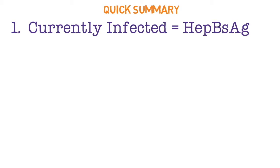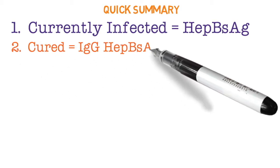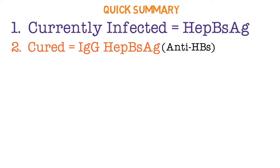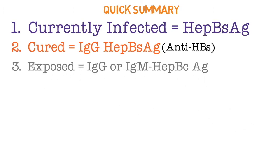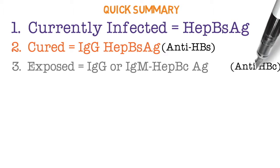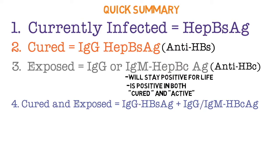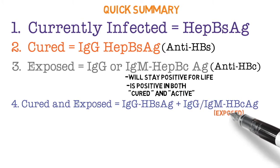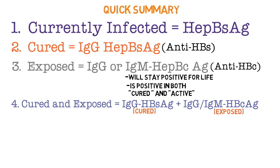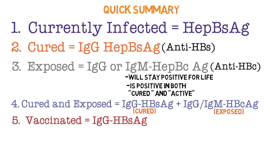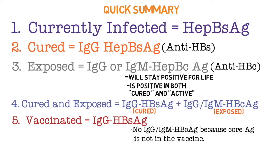Quick summary: Number one — currently infected equals hepatitis B surface antigen. Number two — cured equals IgG hepatitis B surface antigen plus anti-HBc. Number three — exposed equals IgG or IgM hepatitis B core antigen; anti-HBc will stay positive for life and is positive in both cured and active patients. Number four — cured and exposed equals IgG hepatitis B surface antigen plus IgG/IgM hepatitis B core antigen. Number five — vaccinated equals IgG hepatitis B surface antigen only, with no IgG or IgM hepatitis B core antigen, because core antigen is not in the vaccine.